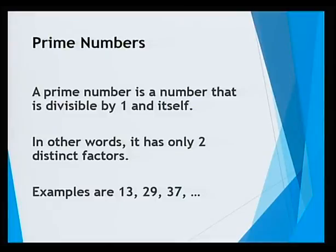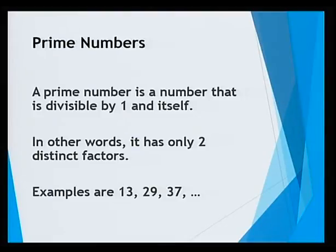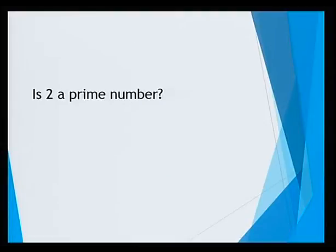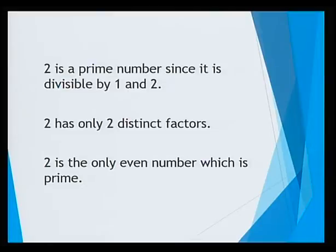We now move on to prime numbers. A prime number is a number that is divisible by 1 and itself. In other words, it has only two distinct factors, that is 1 and the number itself. Some examples are 13, 29, 37, and so on. Is 2 a prime number? 2 has only two factors, that is 1 and 2, so 2 is a prime number. In fact, 2 is the only even number which is prime. Usually, even numbers are not prime, but the only exception is 2, which is a prime number though it is even.